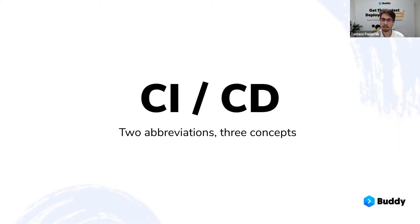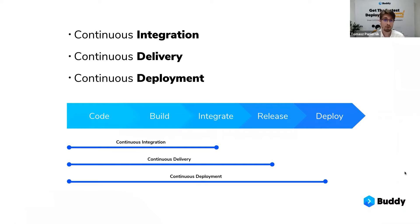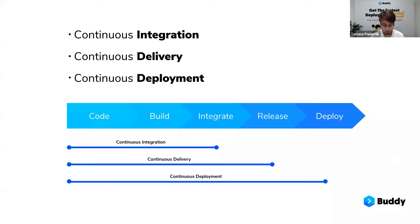First of all, CI-CD. We have two abbreviations, but actually there are three concepts behind these two abbreviations. These three concepts are continuous integration, continuous delivery, and continuous deployment. Keep in mind this is a very basic thing, but people get it wrong quite often — none of these three are a tool. These are practices, approaches that all focus on creating an efficient and automated process for delivering software.